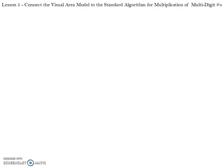In Lesson 5 of Module 2, we're going to be talking about how to connect the visual area model for multi-digit multiplication with the standard algorithm. The problem we're going to be using to solve is 23 times 31.